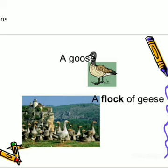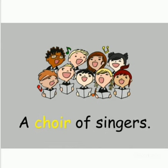A goose is a single bird. But if so many geese are there, it is called a flock of geese. So, flock is a collective noun used for a group of geese. Many singers singing together form a choir. A choir of singers is singing a song. So, choir is a collective noun given to singers.